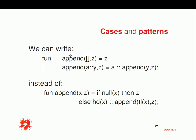Recall our append function: fun append x comma s — if null x then s, else head of x double colon append of tail of x comma s. Using cases and patterns instead, we rewrite this as fun append with an empty list comma s as the first case.